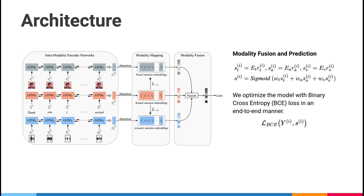For modality fusion and prediction, because we already have the emotion embeddings and the vector representation for each modality, we can do a simple dot product attention calculation. We obtain unnormalized attention scores ST, SA, and SV. To do the modality fusion, we use a weighted sum. The weights WT, WA, and WV are all scalars representing the importance of each modality. On top of that, we apply the sigmoid function, and with a preset threshold value we classify the data points to either 0 or 1 on each emotion category. We optimize the model with binary cross-entropy loss in an end-to-end manner.